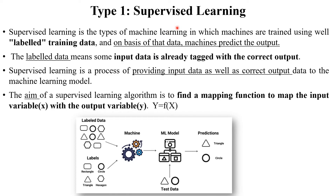So what is meant by supervised learning? Supervised learning is the first type of machine learning in which machines are trained using labeled data — we pass labeled input to the machine. For example, in the diagram there are two types of input which include label data and their image. This is the image of a circle and the label is circle; this is the image of a rectangle and the label is rectangle. We pass this labeled input to the machine, providing both the input data and the correct output data.